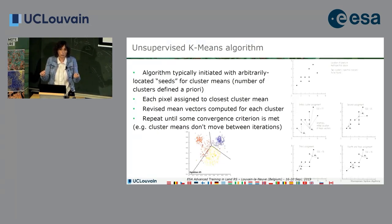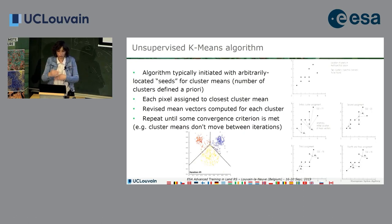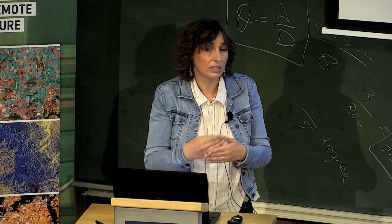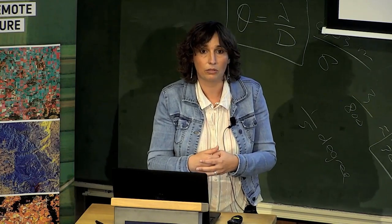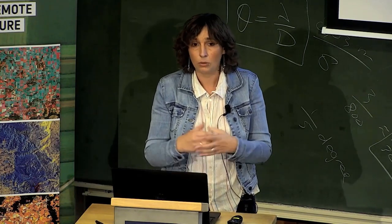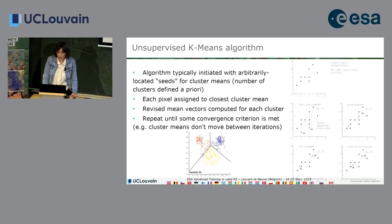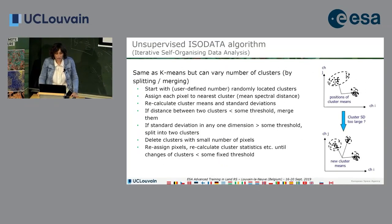The mean of the clusters becomes the new seeds, and the process is repeated — you reassign all the pixels to the new seeds — until convergence is met, making your clusters rather homogeneous. The second algorithm is ISODATA, which stands for Iterative Self-Organizing Data Analysis.